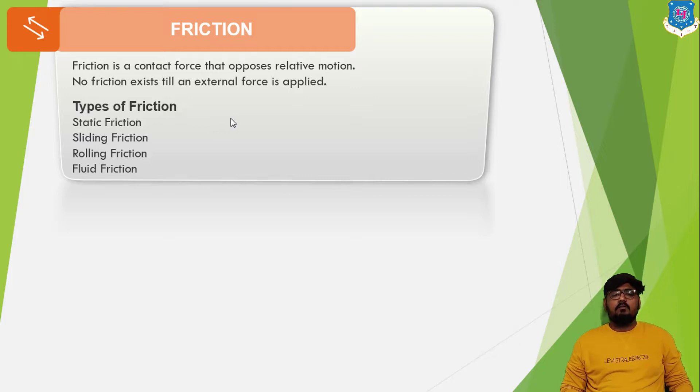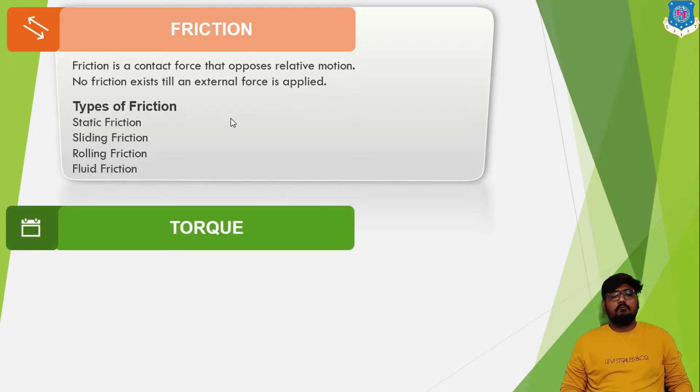Now, here we come with the next topic that is the torque. Torque is the measure of the force that can cause an object to rotate about its axis. It is a kind of force that causes a rotational motion. Force is what causes an object to accelerate in linear kinematics. Similarly, torque is what causes an angular acceleration.